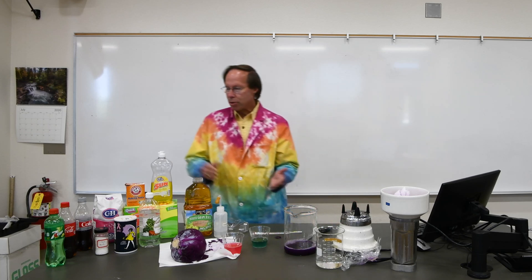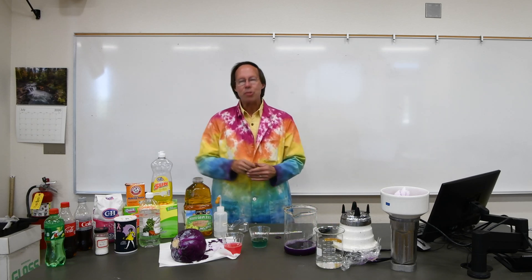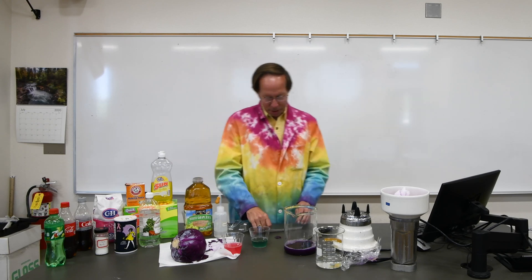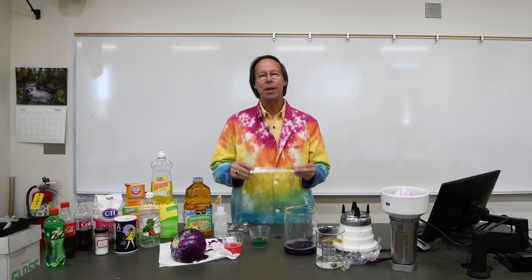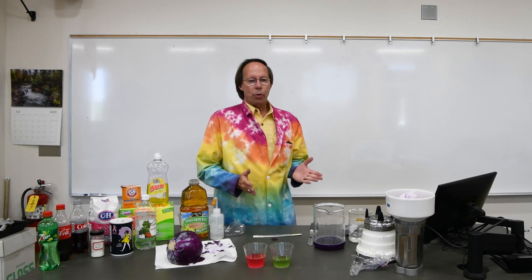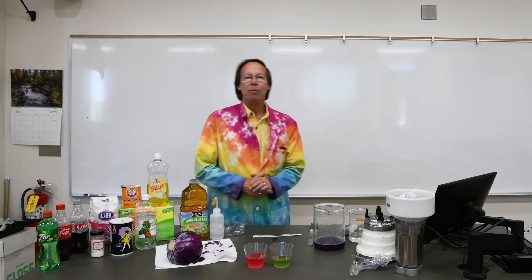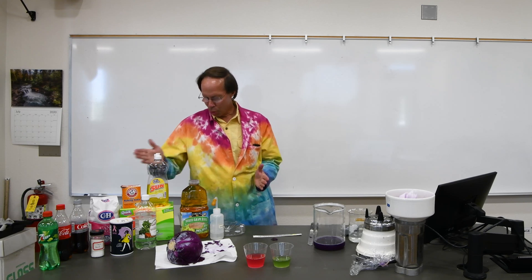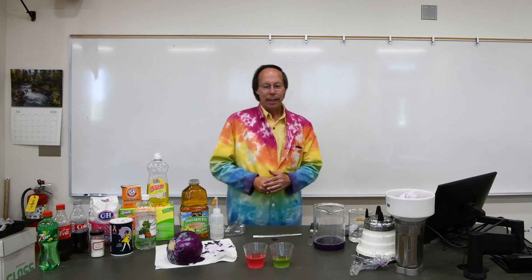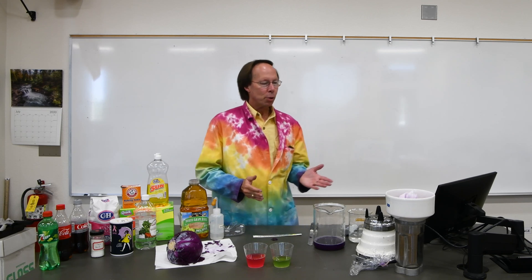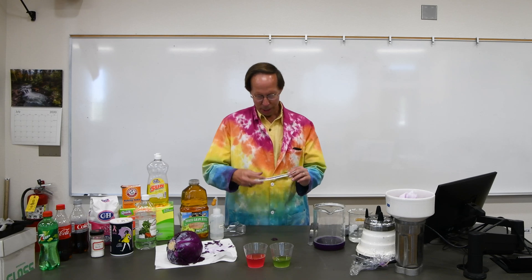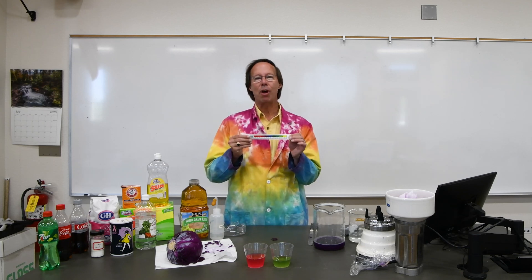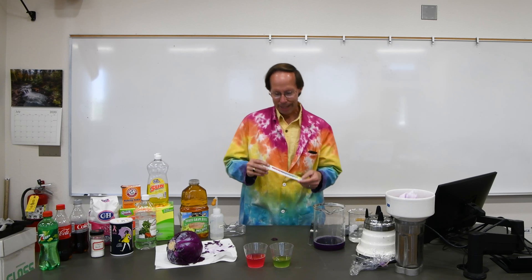So in the lab today, you guys are going to be testing a bunch of different household products. And then by comparing the colors to our little color chart, you'll be able to come up with an estimate for the pH values. You'll be testing a total of 10 different household products. I've got them all laid out here. And getting an estimate of the pH. In fact, if you look in the lab book, in the table it says approximate pH because you can't get a very precise pH value with cabbage juice. But it gives us a pretty good estimate.